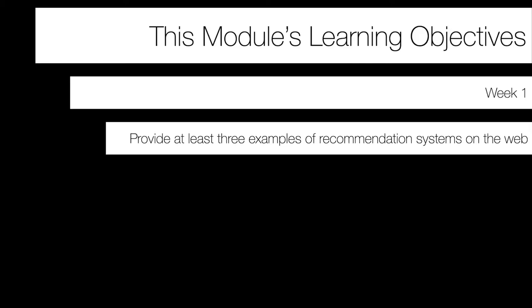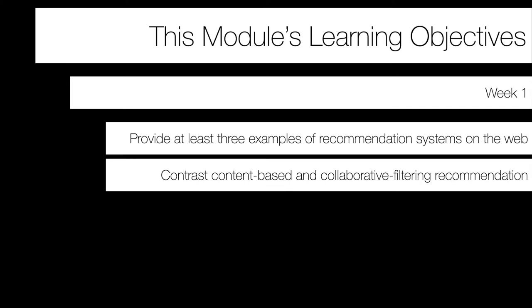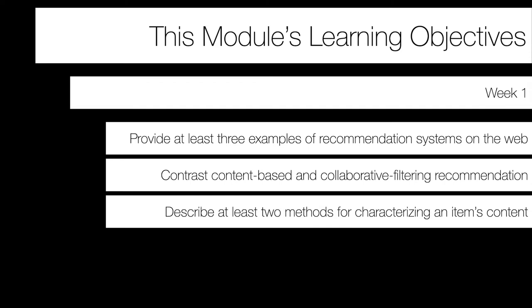In week one, we'll talk about recommendation systems and several examples of how they exist on the web. Then we'll contrast content-based recommendation with collaborative filtering. Content-based is where we use characteristics or features of the actual item to recommend similar items. Collaborative filtering is more social network based — we'll talk about that next week. This week you should be able to contrast the differences between these two.